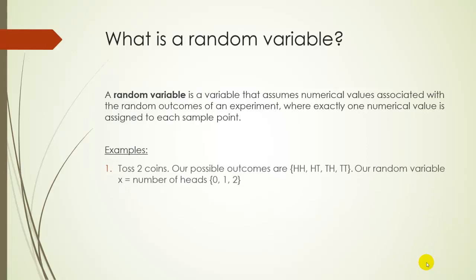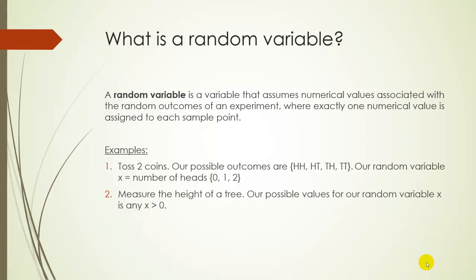So for example, suppose you toss two coins. Each coin can either be heads or tails. So since we're tossing two coins, we can either get HH, HT, TH, or TT. So maybe our variable is counting the number of heads. We could get one head, two heads, or no heads. So our possible outcomes are zero, one, or two for a random variable. And notice these are numerical values. We're just counting the number of heads.